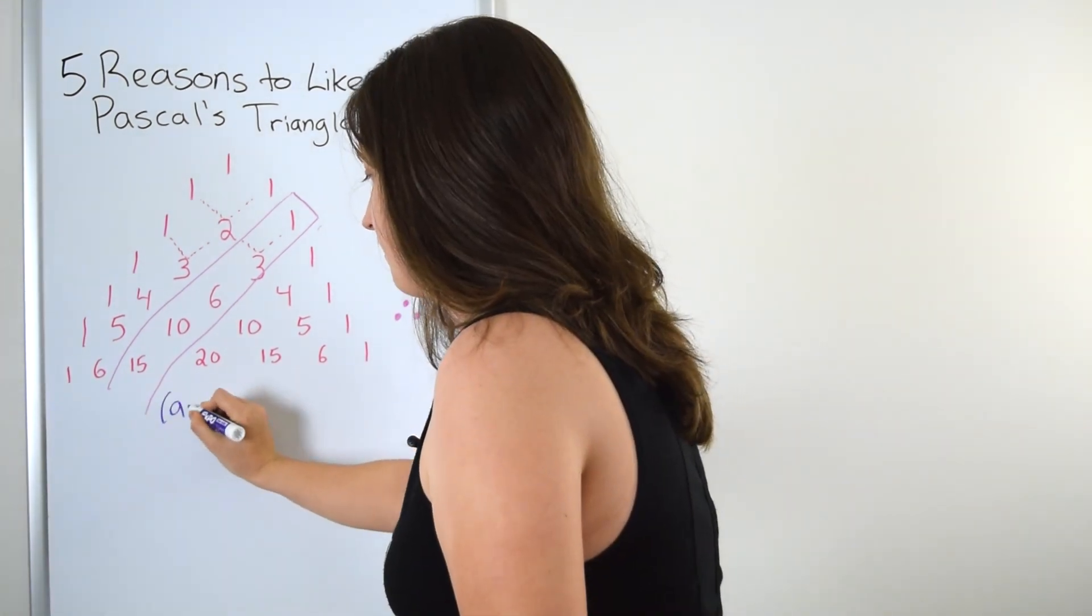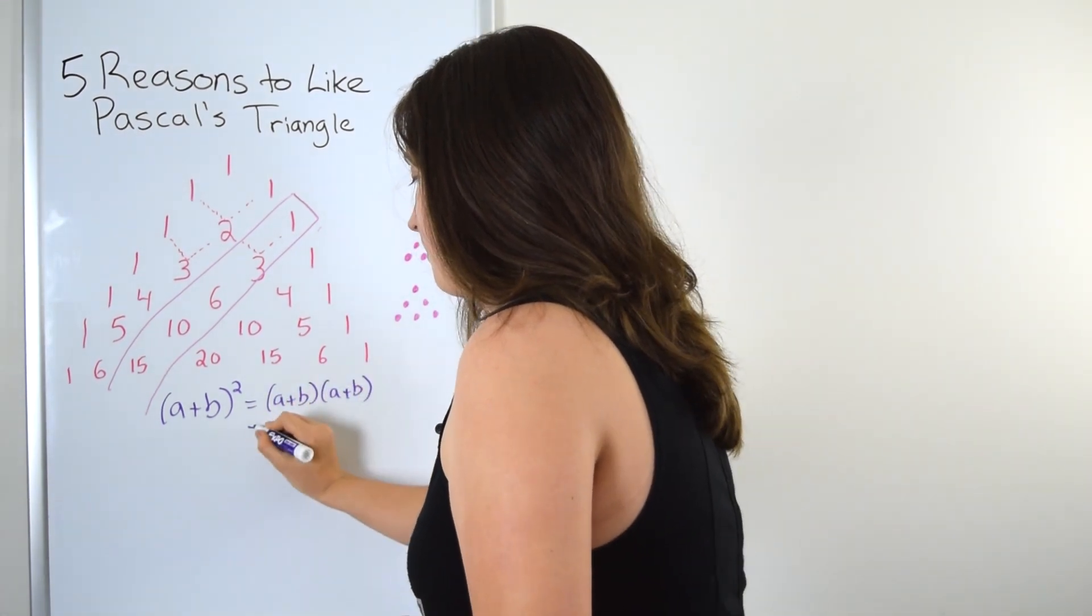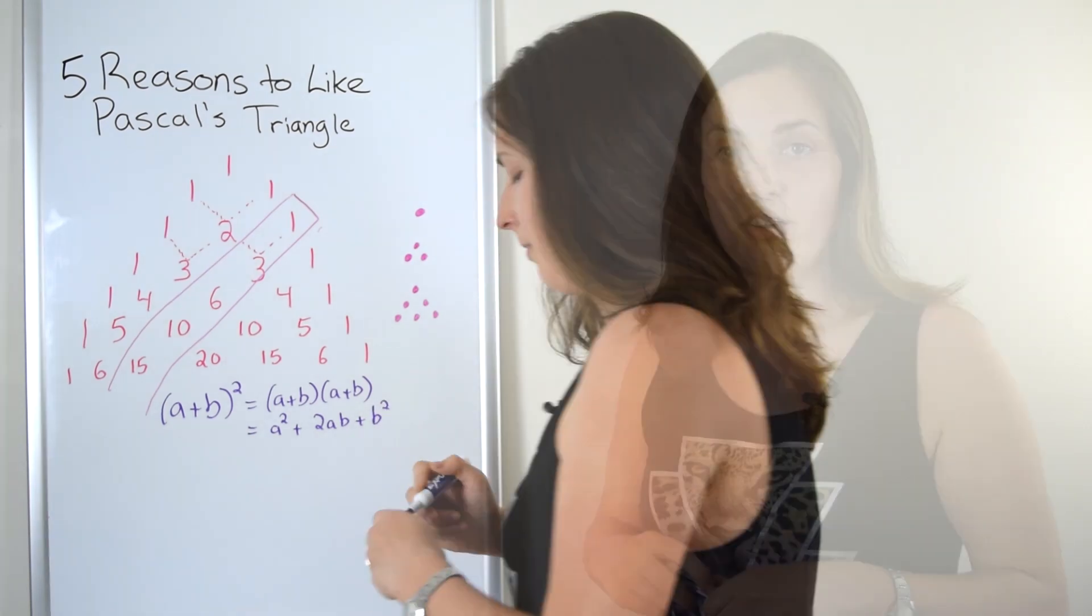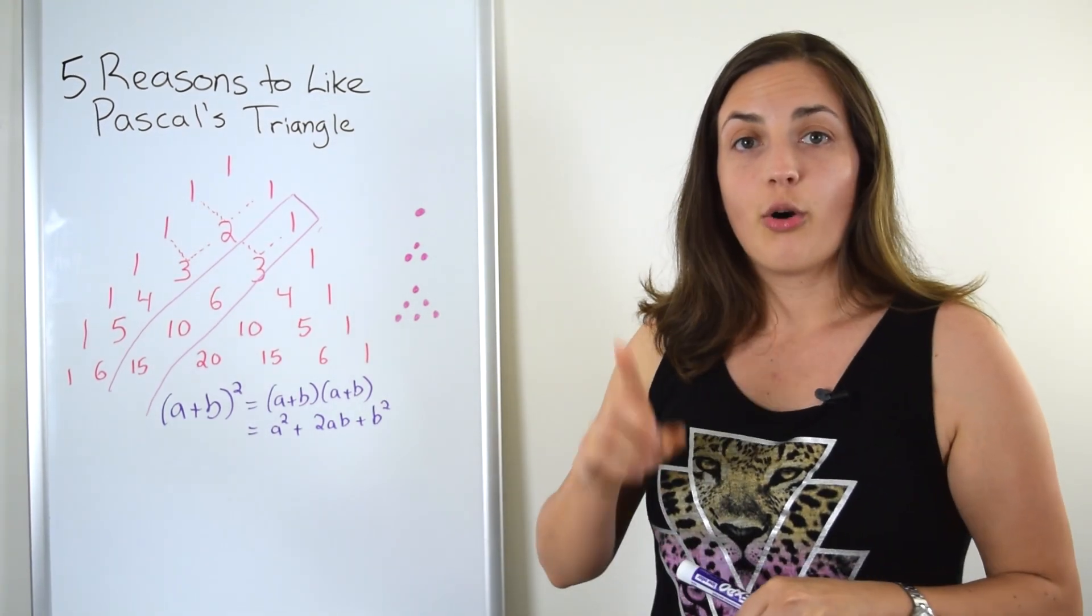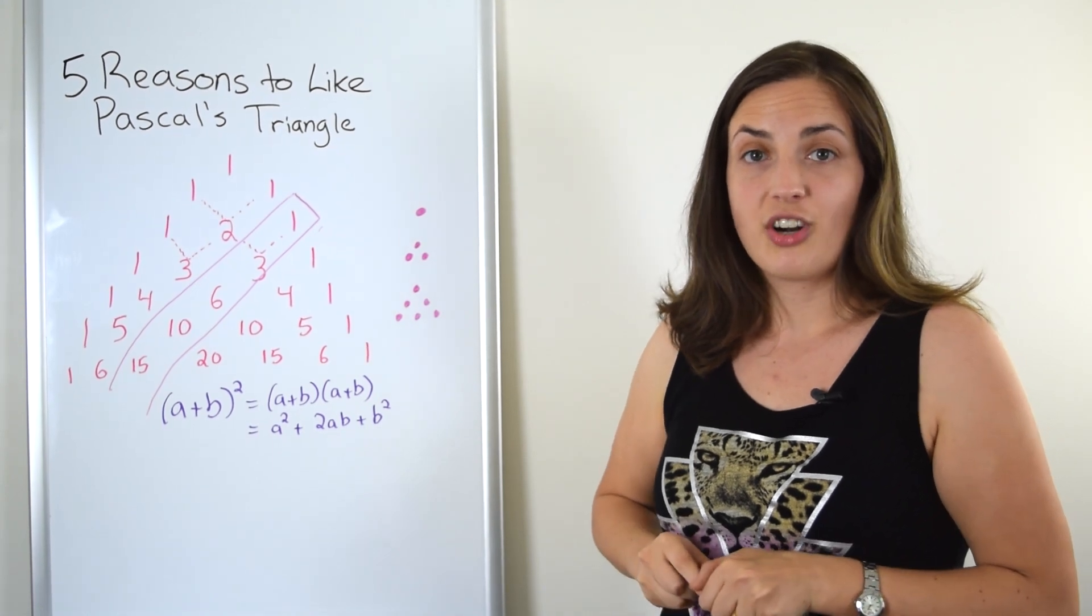If you look at (a+b) squared, that's equal to (a+b) times (a+b). And when you expand that out, you'll get a squared plus 2ab plus b squared. And those coefficients are one, two, one.